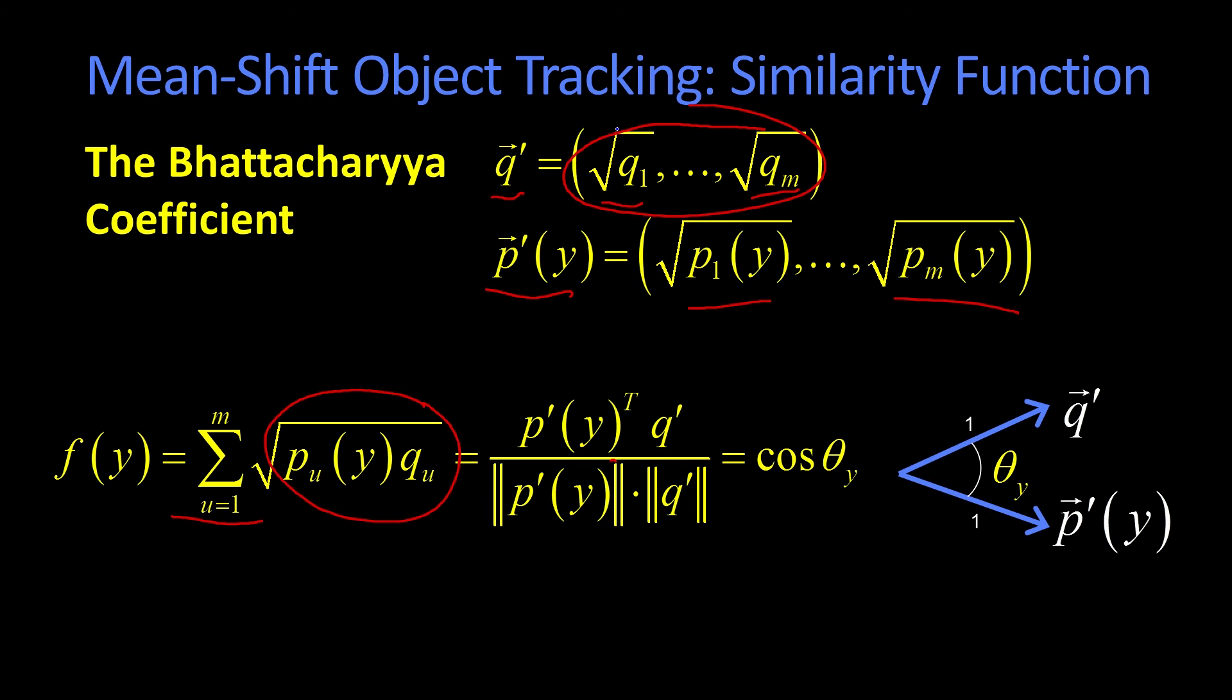Well, the sum of the squares is what? Well, since the sum of the q's is one, the sum of the square roots then squared is going to be one, so the magnitude is one. So these magnitudes here, those are one.